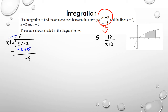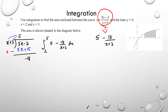So the remainder is negative 18. Someone said negative 3 plus 15 is positive 12, but notice I'm subtracting, so it's negative 3 minus positive 15, which is negative 18. Using quotient over remainder over divisor format, I can write the function as 5 minus 18 over (x plus 3), and I need to integrate that between 5 and 2.